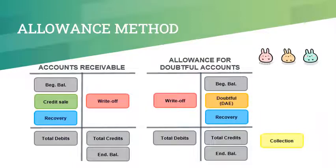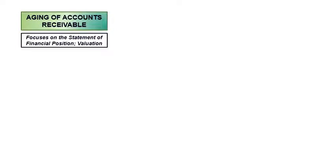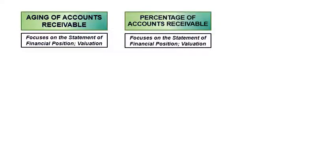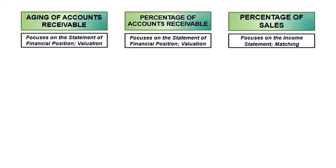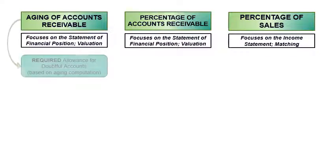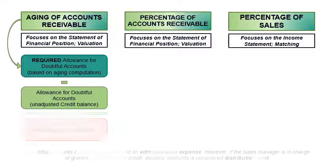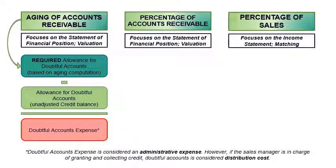Finally, collection of receivables decreases the accounts receivable balance. The allowance method entails estimating doubtful accounts, for which we have three methods. First is aging of accounts receivable, which focuses on the statement of financial position or the valuation of accounts receivable. Second is percentage of accounts receivable, which also focuses on the statement of financial position or the valuation of accounts receivable. The aging of accounts receivable computation gives us the required balance of the allowance for doubtful accounts. The difference between the required balance and the unadjusted balance is the doubtful accounts expense. The allowance for doubtful accounts normally has a credit balance, but it can also have a debit balance — an unadjusted debit balance is added to the required balance to compute for doubtful accounts expense.